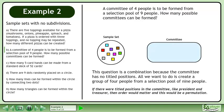This question is a combination because the committee has no titled positions. All we want to do is create a group of four people from a selection pool of nine people. If there were titled positions in the committee, like President and Treasurer, then order would matter and this would be a permutation.